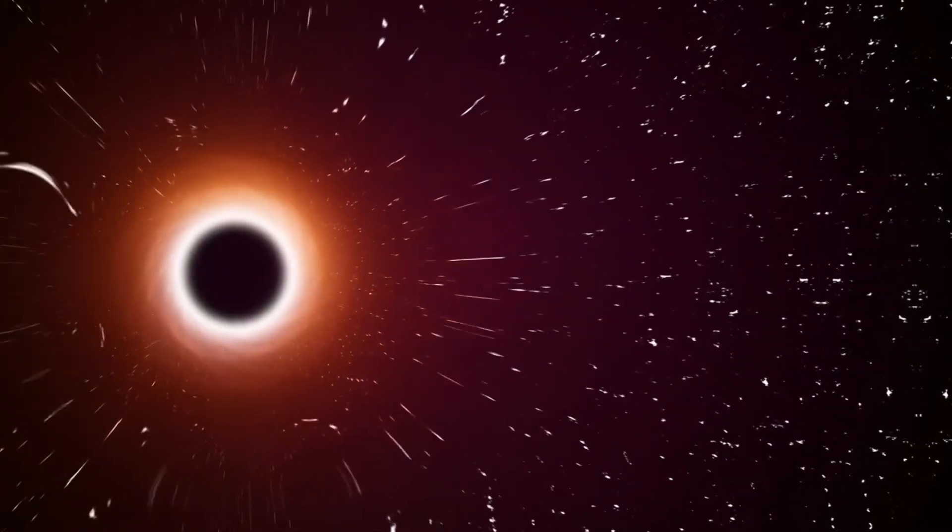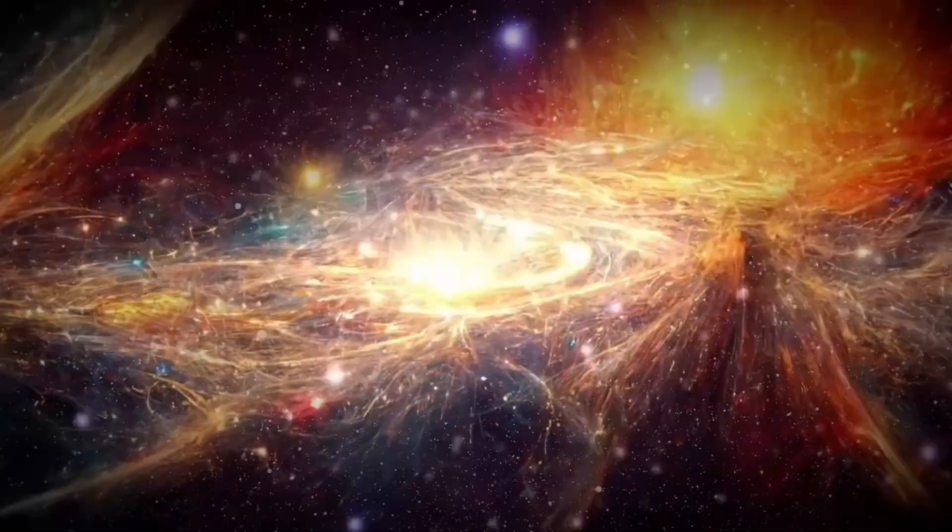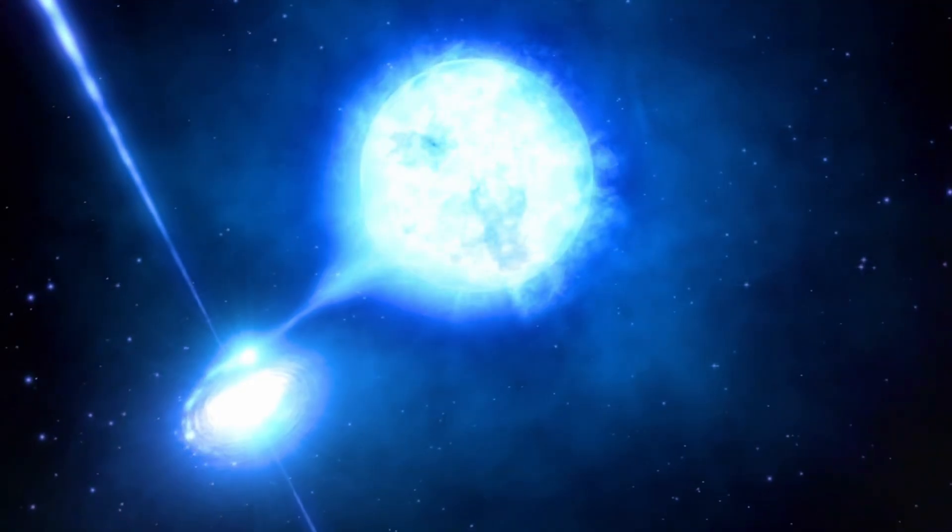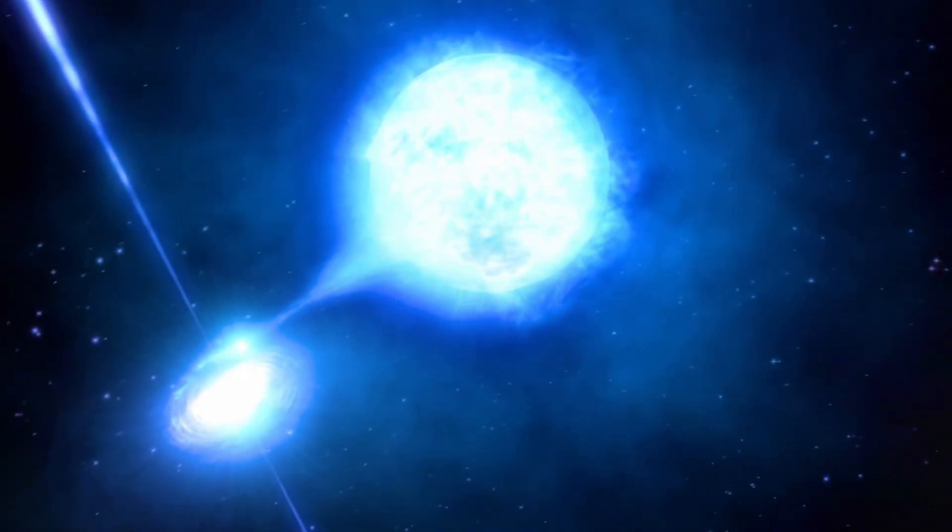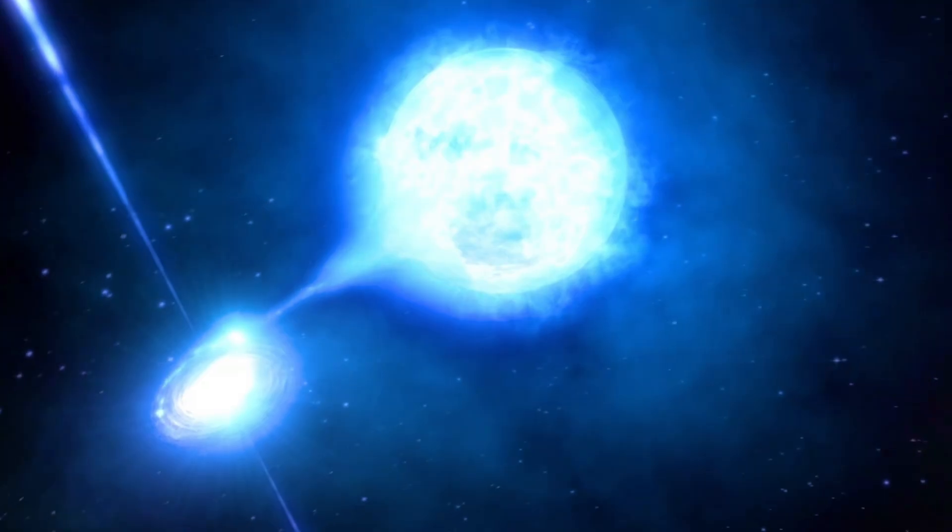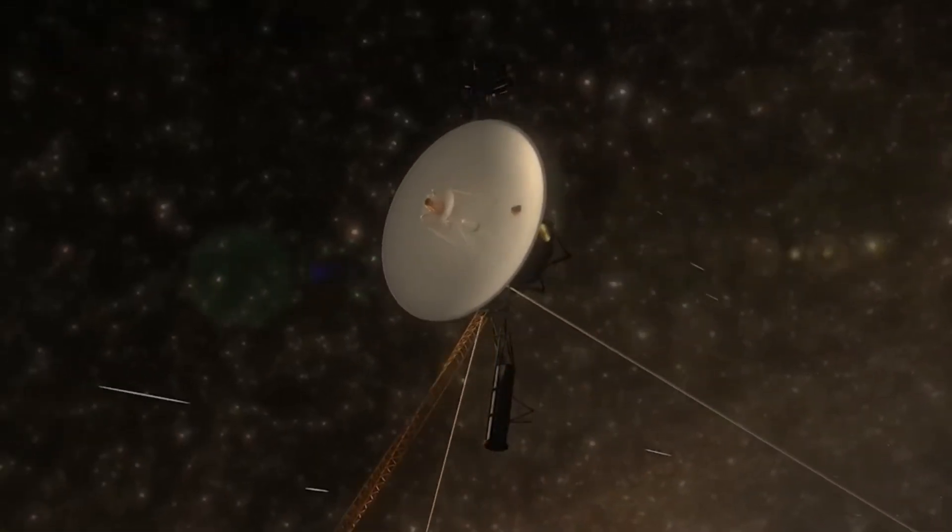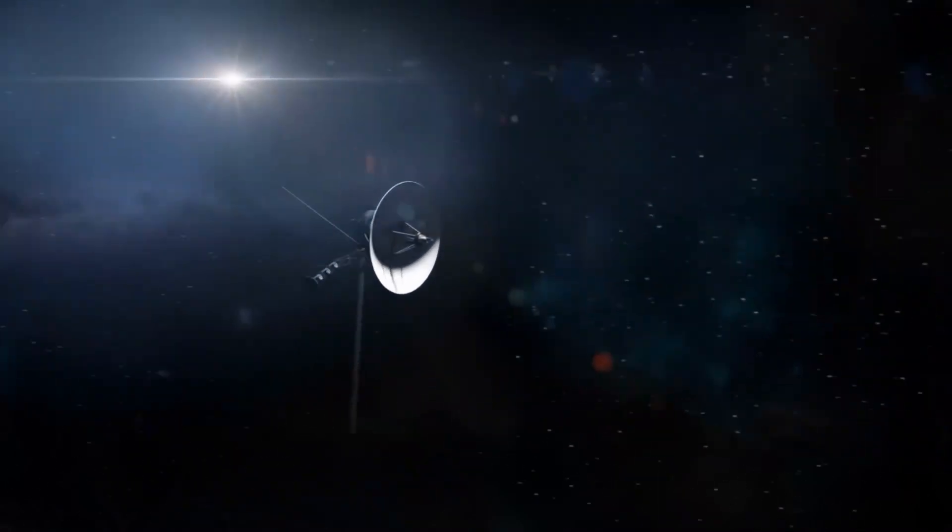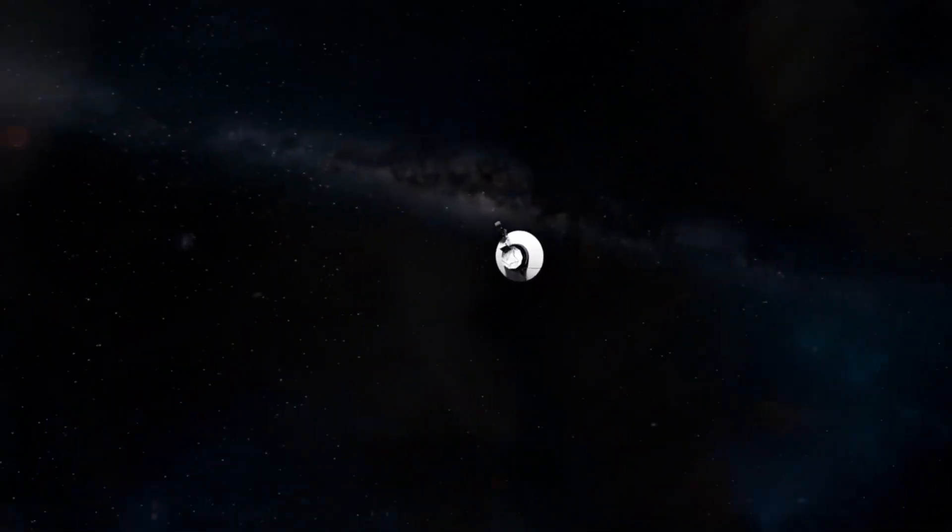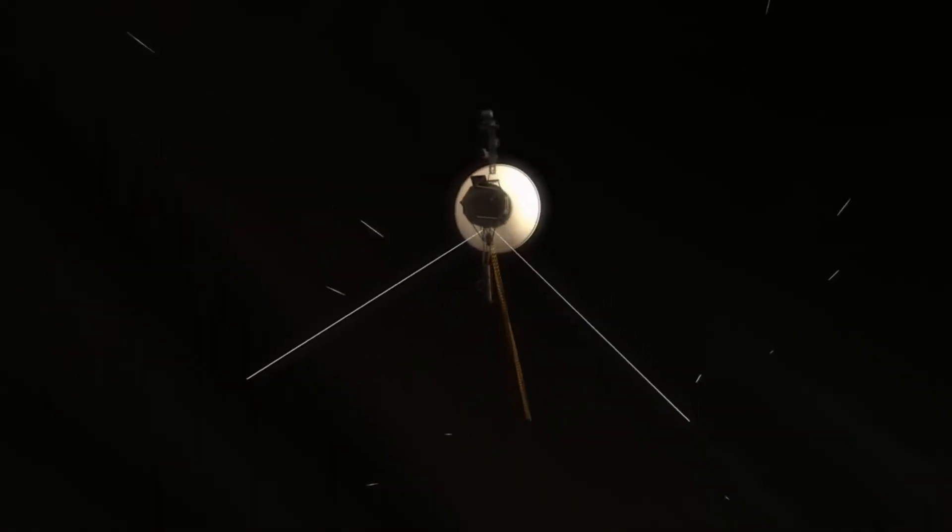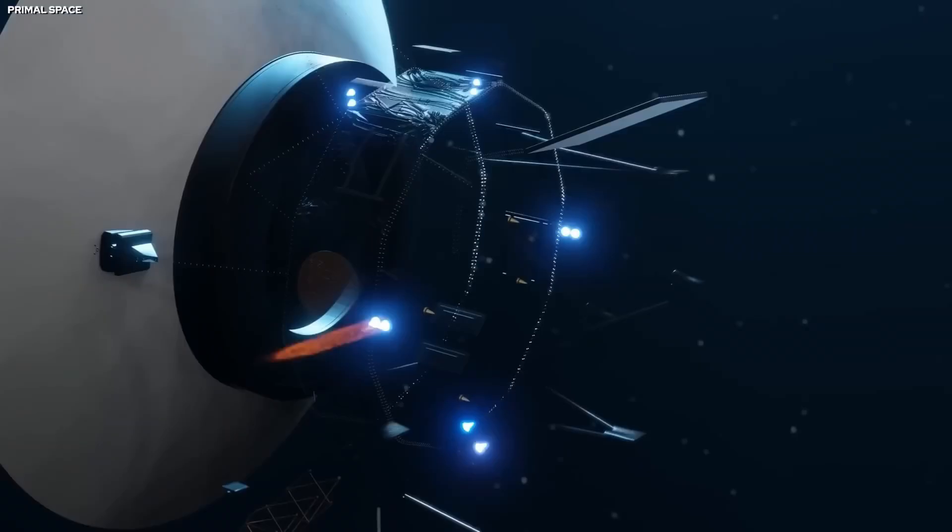By 1998, Voyager 1 had overtaken Pioneer 10 as the most distant spacecraft from Earth. By 2006, it had traveled 9.3 billion miles, and today it has surpassed 15 billion miles. It's no surprise the mission still captivates the scientific community. Even more extraordinary is that Voyager 1 continues to maintain contact with Earth despite never receiving a repair in all those years.